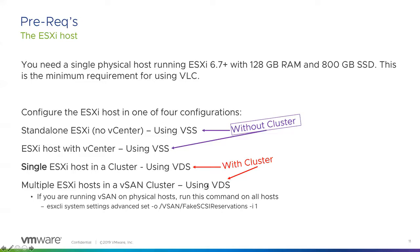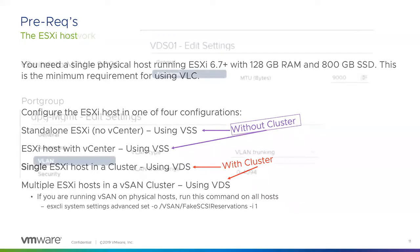If you're running a vSAN cluster, you need to run the ESXCLI command so that we can actually run fake SCSI reservations. If you do a little Googling on this, it'll take you to William Lam's blog, which explains why you need this. To do this — if you're running vSAN on physical and also running vSAN nested — you need to run these commands so that vSAN does not go crazy.